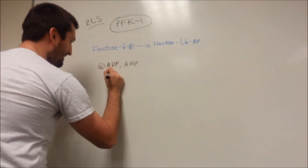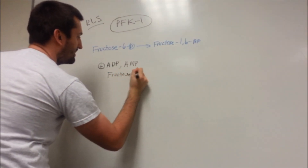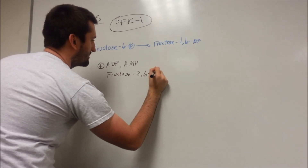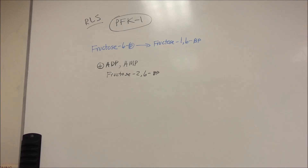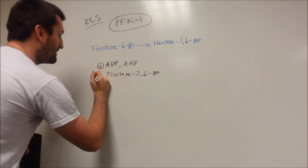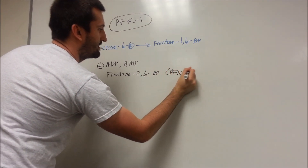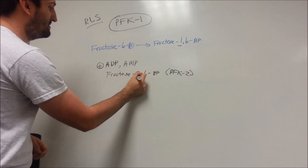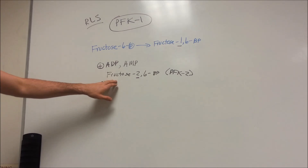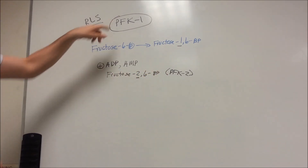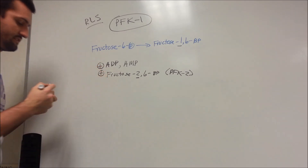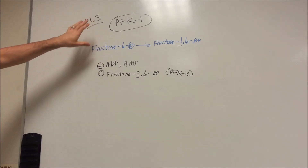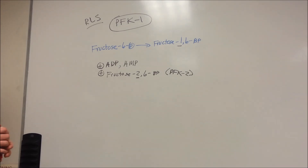There's another stimulator: fructose-2,6-bisphosphate. PFK1 puts the phosphate at the one position; PFK2 puts the phosphate at the two position. Fructose-2,6-bisphosphate is going to stimulate PFK1 — it's like a little cousin that pushes PFK1 to work harder and kick it into overdrive. So fructose-2,6-bisphosphate is a key stimulator of the rate-limiting enzyme.